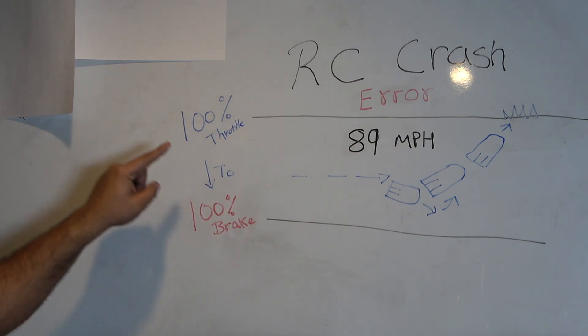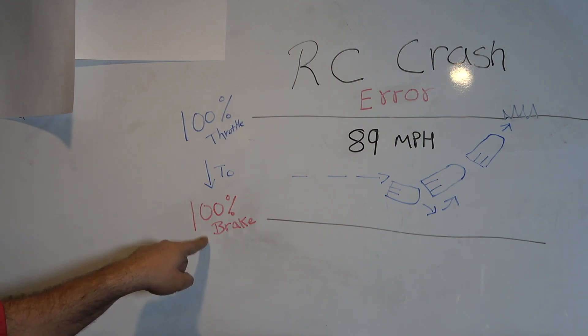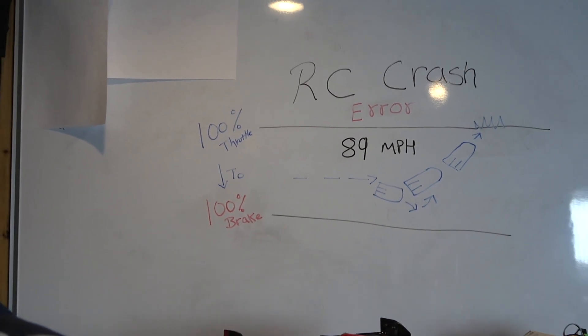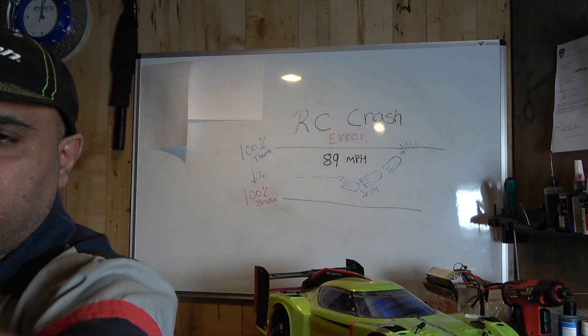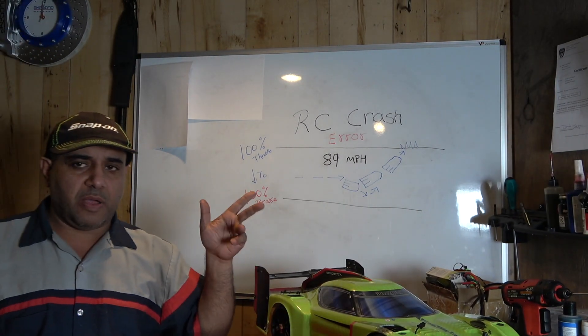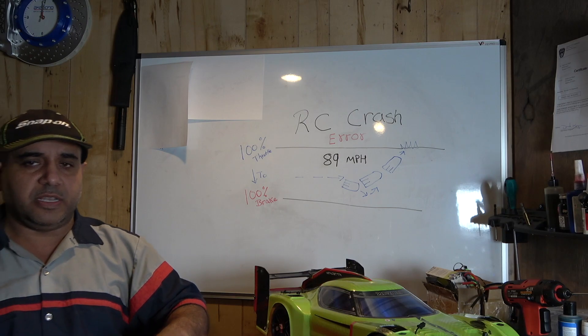We have 100% throttle output and 100% braking. So we're running this Vendetta here. We want to zoom up a little bit more so you can see. There you go, so this Vendetta was what I was running.